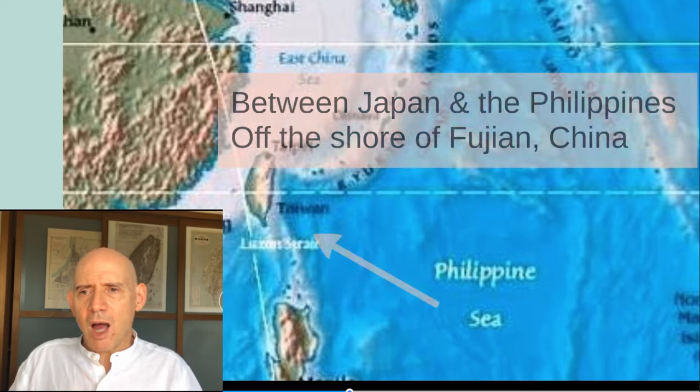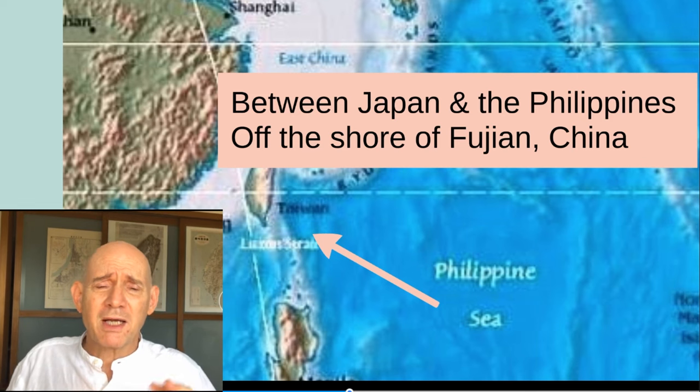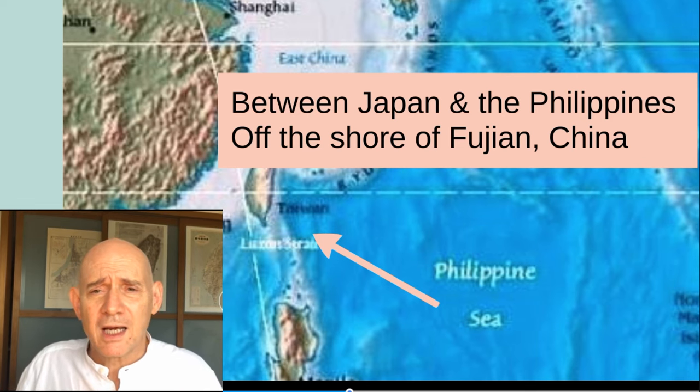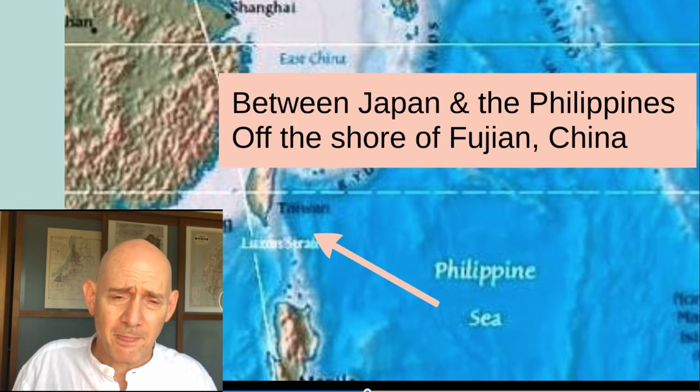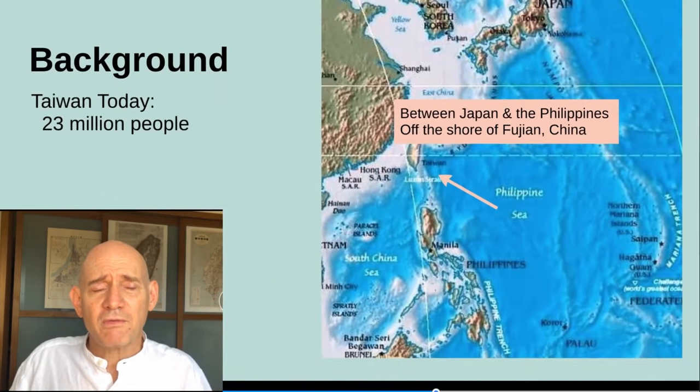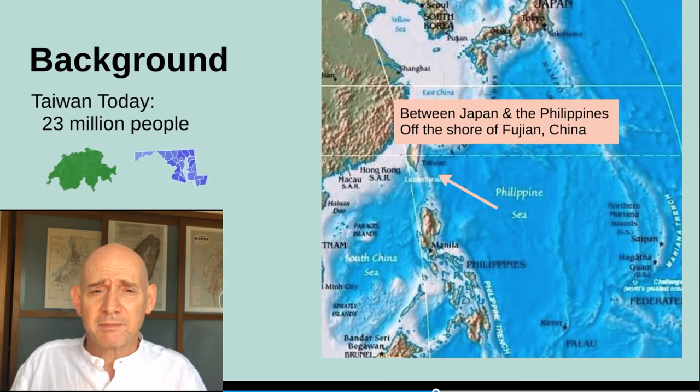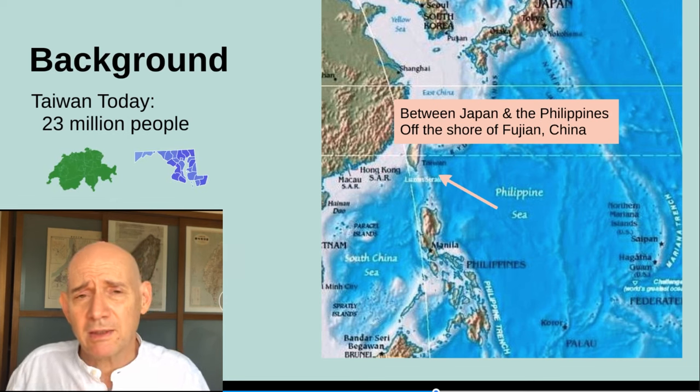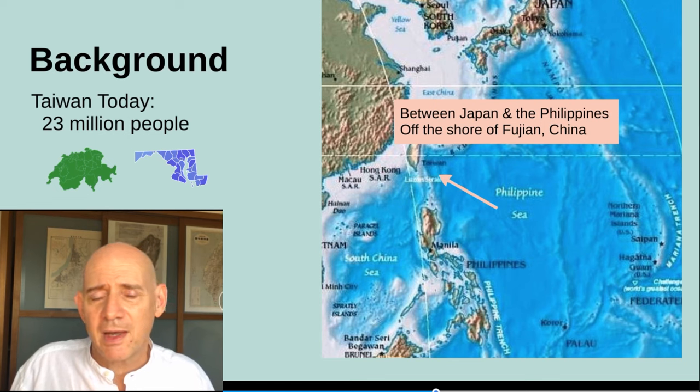Taiwan lies south of Japan and north of the Philippines. It's a semi-tropical island, high, steep mountains, lots of vegetation. Taiwan is also a very populated island. Today it has about 23 million people. In size, it's only about as large as Switzerland. If you're thinking in terms of US states, it's about the size of Maryland. These are places with populations much less than 23 million.